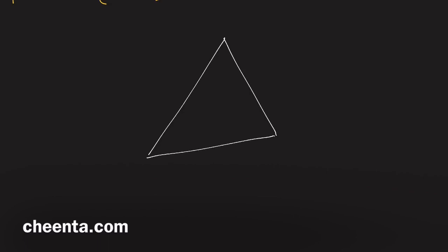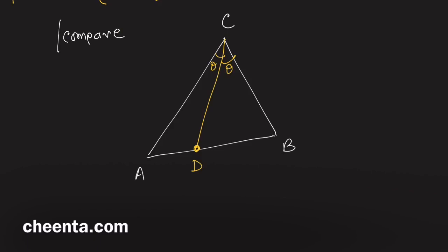Let me draw a triangle — triangle ABC. We have the angle bisector of this triangle, which is CD. This angle is θ and this angle is θ, so CD is the angle bisector of angle C.